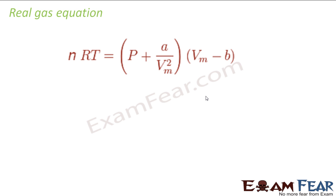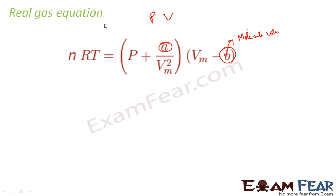This is our real gas equation. As I told, the volume of the molecules is not negligible — it has some value. So what we will do is take that value into account. The constants A and B here take care of the volume part and the pressure part. Since the volume of the molecule is not negligible, we subtract the molecular volume term. The pressure also has some extra component, so we add the A/V² term. So instead of PV = nRT, the real gas equation becomes: (P + A/Vm²)(Vm − B) = RT. Based on experiments, they have given the constant values for A and B, and we get this real gas equation.